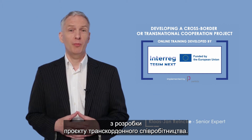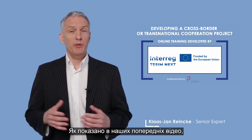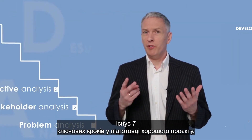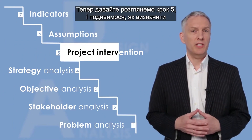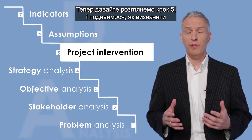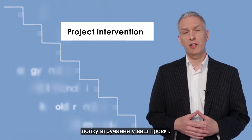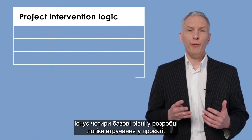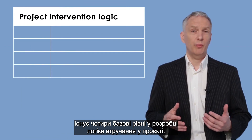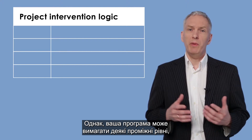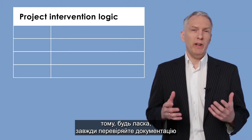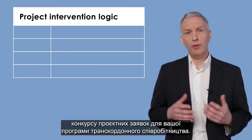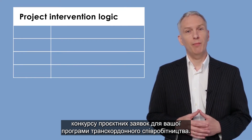Welcome to this online training on developing a cross-border cooperation project. As presented in our previous videos, there are seven key steps in preparing a good quality project. Let's take a look at step 5 and see how to define your project intervention logic. There are four basic levels in the design of your project intervention logic; however, some intermediary levels may be requested by your program, so please always check the documentation of the call for proposals.